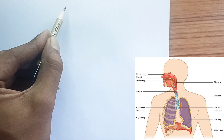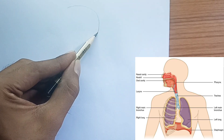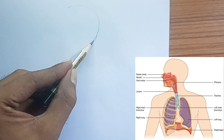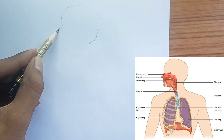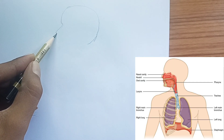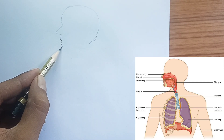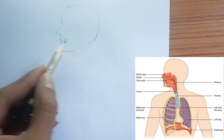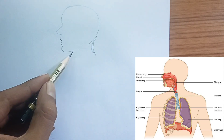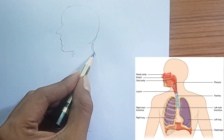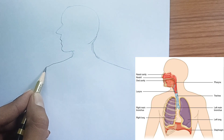In this video, I will be drawing the diagram of the human respiratory system, so follow me along the video to draw this diagram easily. Let's take a breath and explore the human respiratory system. Imagine a network of tubes and sacks designed to bring life-giving oxygen into your body and whisk away carbon dioxide, a waste product. It's a continuous exchange that's essential for our survival.